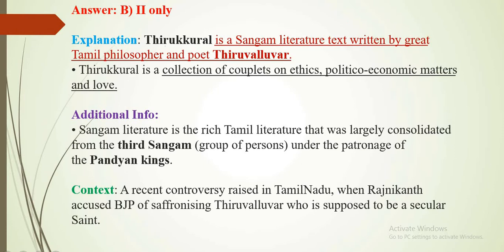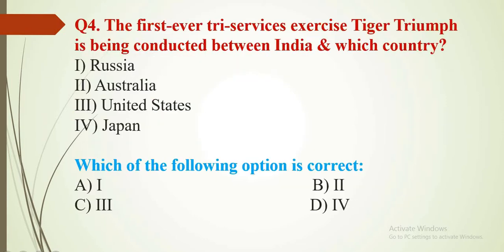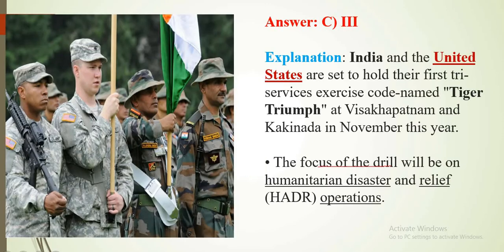Thirukkural is a Sangam literature text written by the great Tamil philosopher and poet Thiruvalluvar. Question number 4: The first-ever tri-service exercise Tiger Triumph is being conducted between India and which country? Four country names have been given. This exercise is being conducted with the USA, so the answer is C. The focus of the drill will be on humanitarian disaster and relief operations.